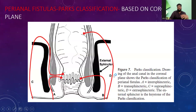Park's classification gives four types of fistulas: first, the intersphincteric fistula; second, the transsphincteric fistula; third, the suprasphincteric fistula; and fourth, the extrasphincteric fistula. The keystone here is the external sphincter.